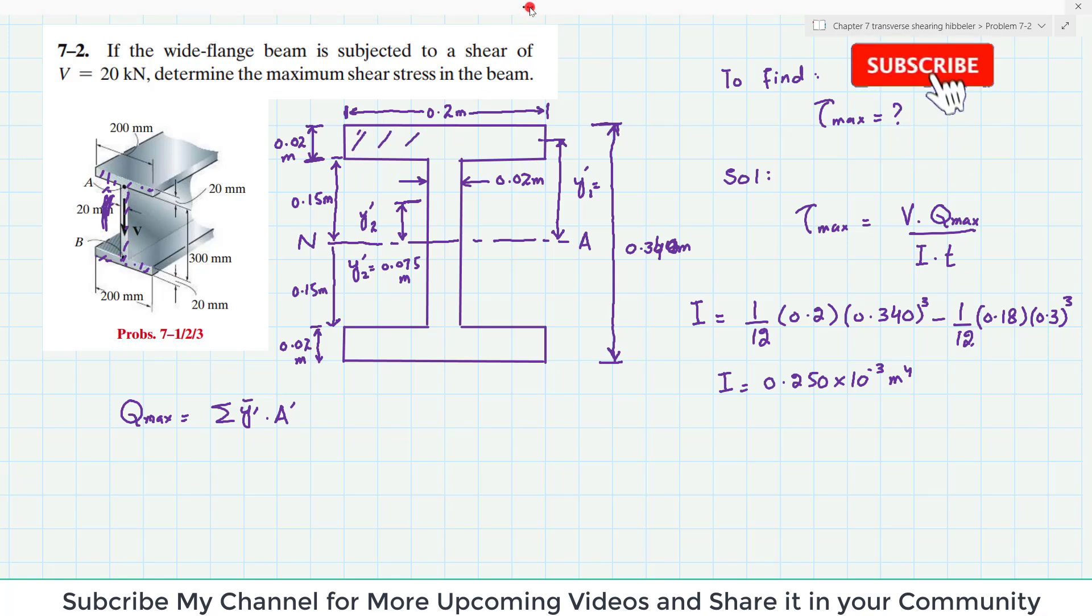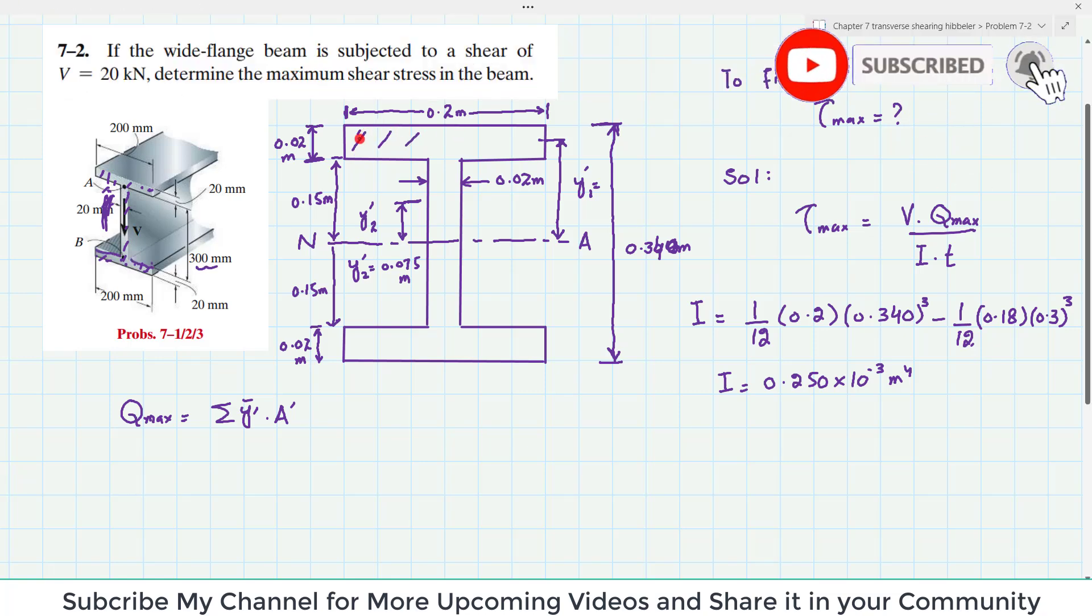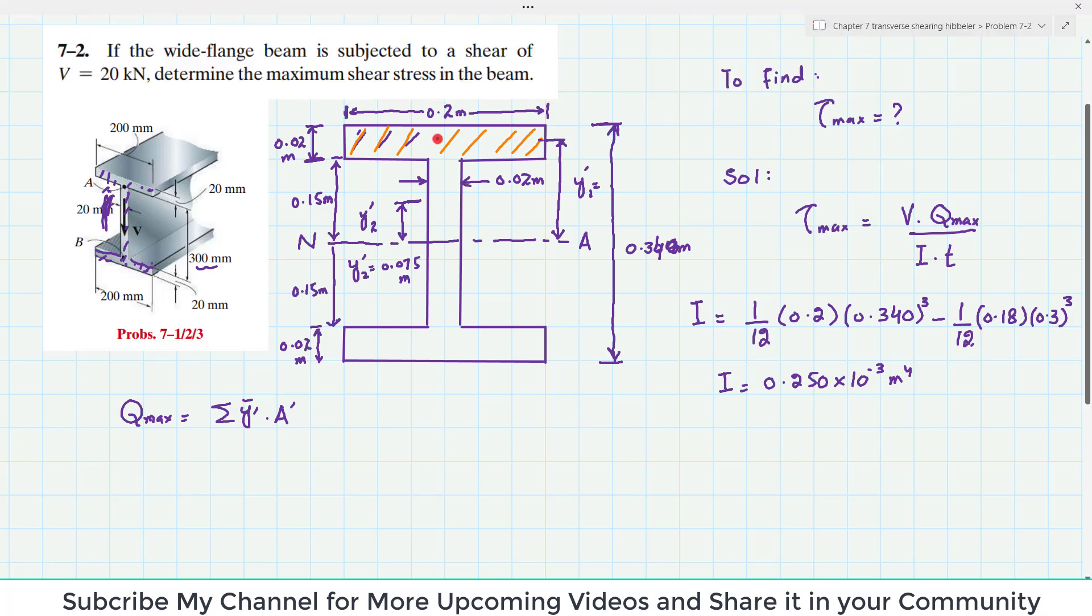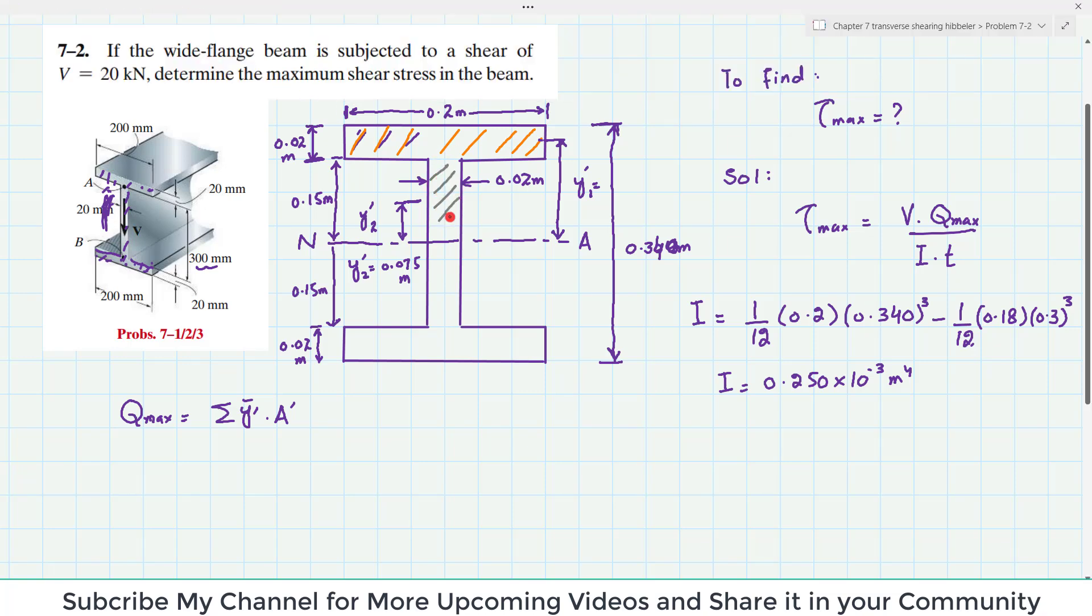One is this one. I will show it by using different color. One area is this one. And the second area is this one. So by using this formula we have Y1 dash into A1 dash plus Y2 dash into A2 dash.